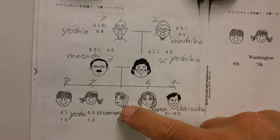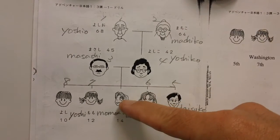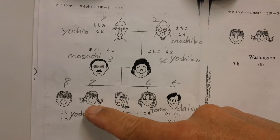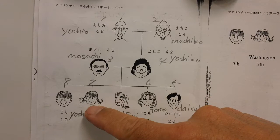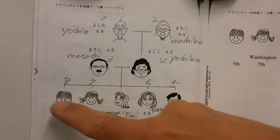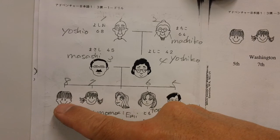Anata — you, when talking to your friend. 妹さん — younger sister, someone else's younger sister. 弟さん — younger brother.